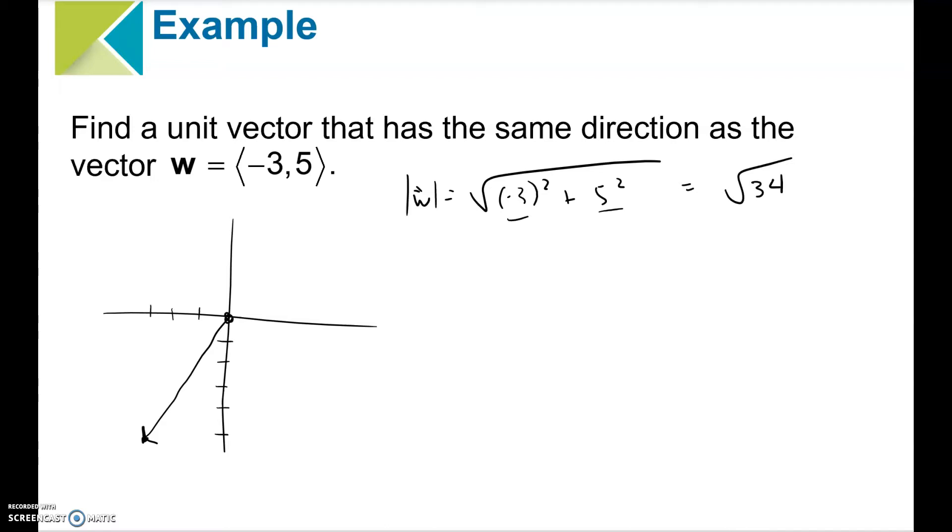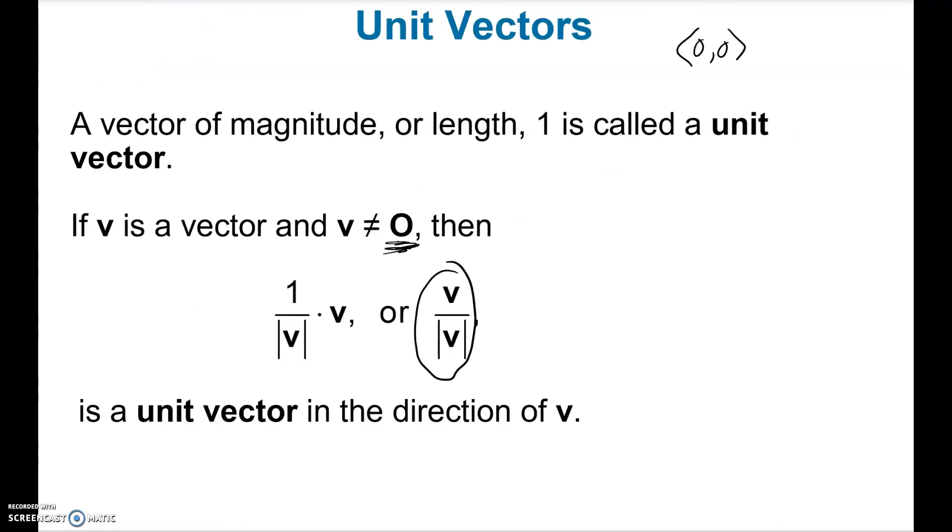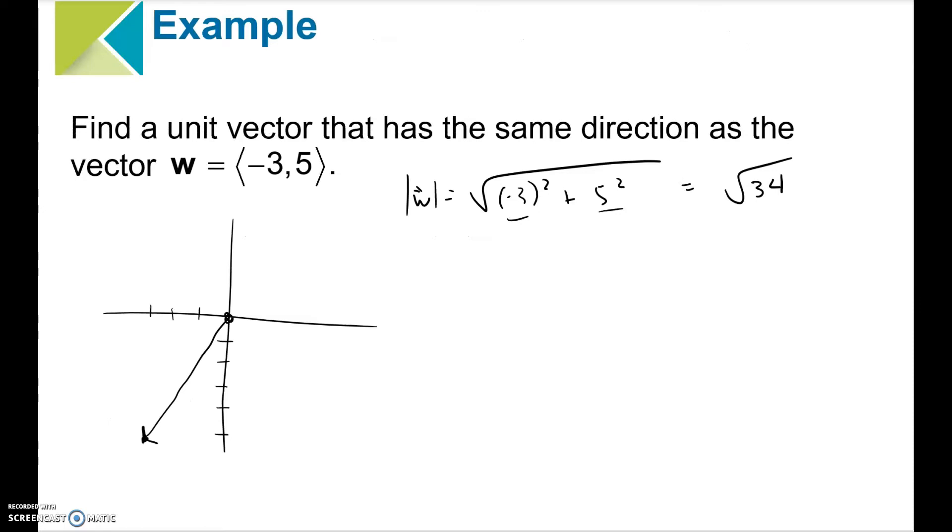I'll try and simplify that if I can. The only thing that goes into 34 I can think of is 17 and 2, and none of those have square roots, so I'll leave it alone. And according to this definition, just divide the vector by its magnitude. So that means divide the vector by this number, a scalar value. So you divide.